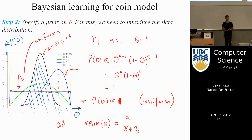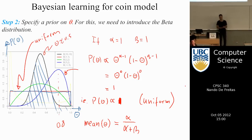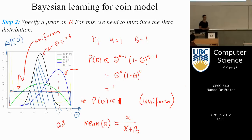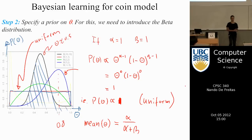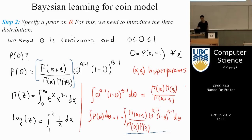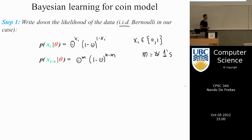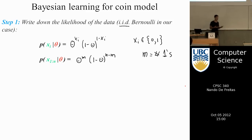Let's get started. Last class, we covered Bayesian learning. For Bayesian learning, there are two things we need to specify: the data model, or what we often call the likelihood, and we need to specify a prior.